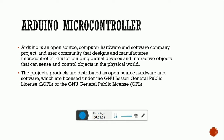Arduino is an open-source computer hardware and software company, project, and user community that designs and manufactures microcontroller kits for building digital devices and interactive objects that can sense and control objects in the physical world. The products are distributed as open-source hardware and software licensed under the GNU Lesser General Public License or the GNU General Public License.